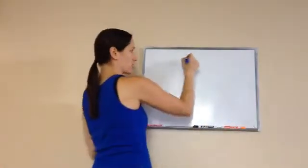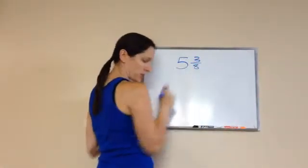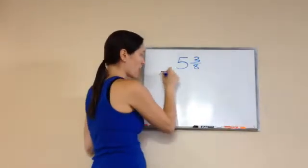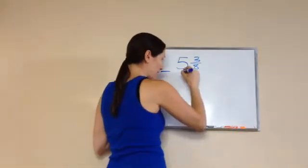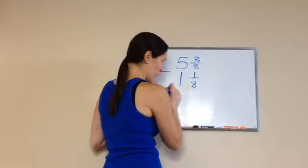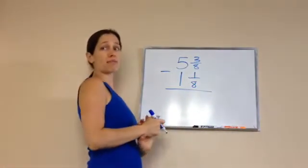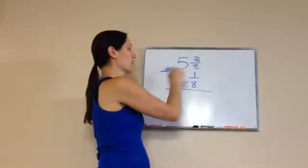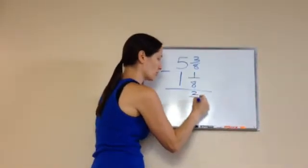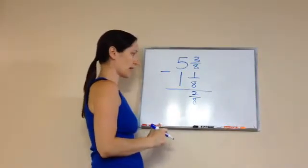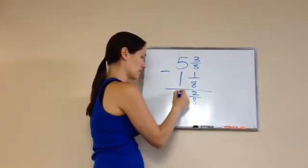Last problem. It tells me to subtract, which this isn't much harder. It's just a subtraction. They want you to see a subtraction problem. Five and three-eighths minus one and one-eighths. What am I going to do? Subtract my fractions first. Three minus one is two. Bring down my eight. Five minus one is four.